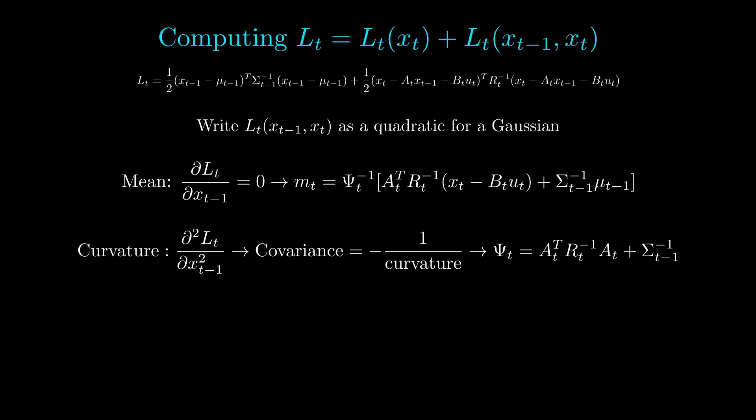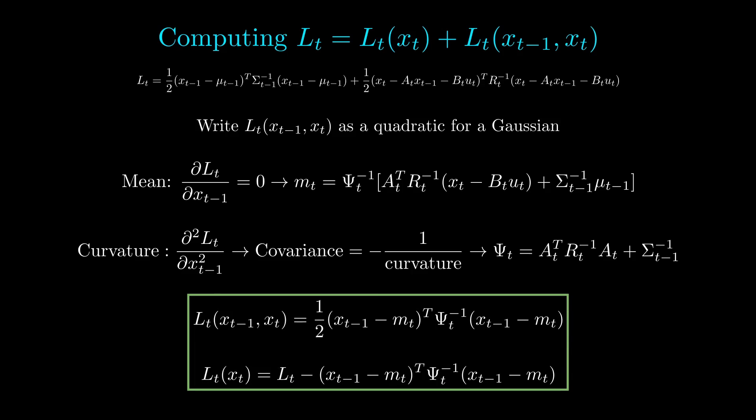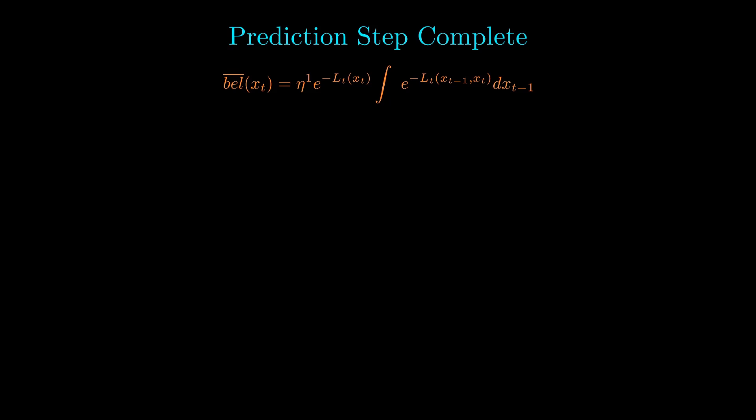So, with the mean and covariance, we can rewrite our desired term in a Gaussian format. Thus, to find Lt of Xt, we simply rearrange our equation. Putting this all together now, we apply the definition of the normal distribution to make it integrate to 1. Thus, if we rearrange for the integral term, it does indeed equal a constant.